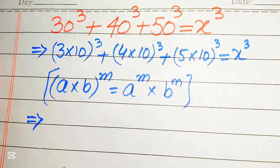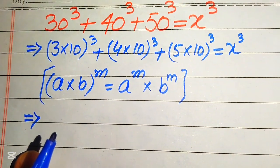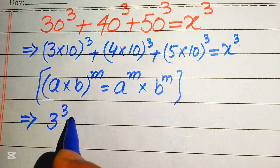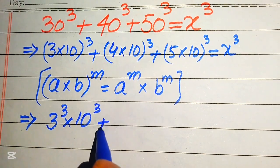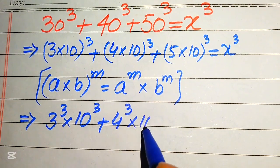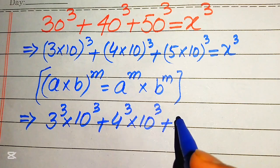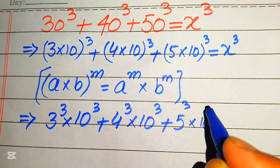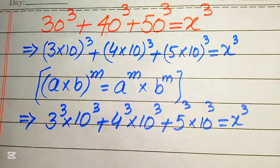Applying the exponent law to all three terms, we can write this as 3 to the power 3 multiplied by 10 cubed, plus 4 cubed multiplied by 10 cubed, plus 5 cubed multiplied by 10 cubed, and this whole equation equals x cubed.